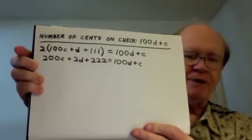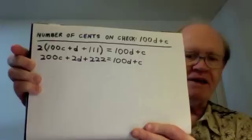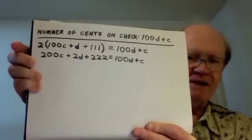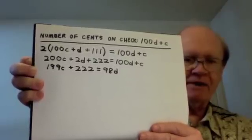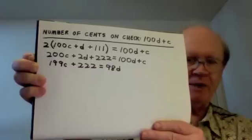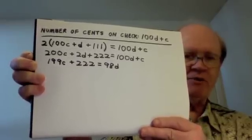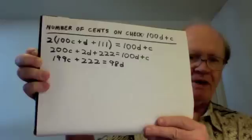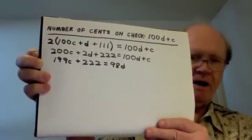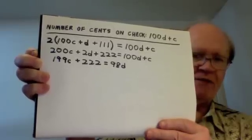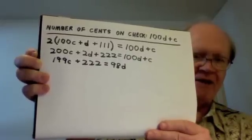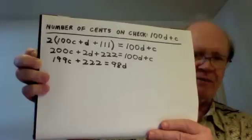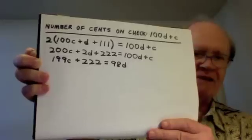Distributing the 2 to the expression in parentheses gives us this equation: 200C plus 2D plus 222 equals 100D plus C. I subtract C from both sides and I subtract 2D from both sides and I get this equation: 199C plus 222 equals 98D. Now both C and D have to be whole numbers less than 100. In this equation 222 is even and 98D is even, which means the first term 199C has to be even. Well 199 is odd, and that means C has to be even.